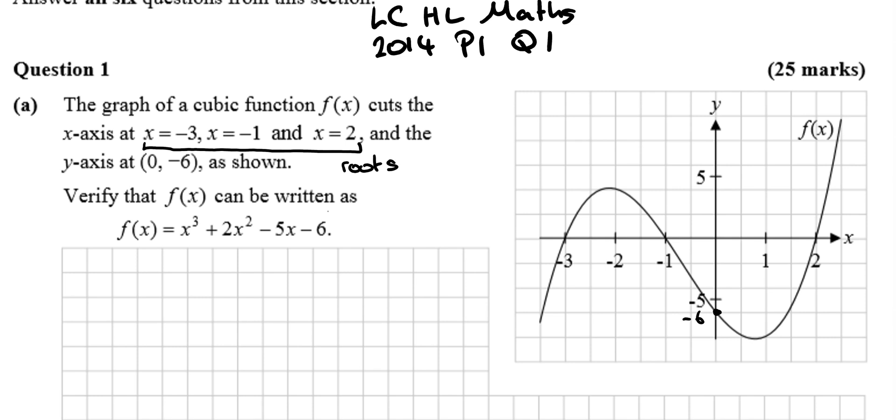Verify that f(x) can be written as. Well, to get the function, we first change the roots into factors, so adding 3 to both sides, we get the first factor as x plus 3, the next factor x plus 1, the next factor x minus 2. And we multiply these two out slowly, these first two.